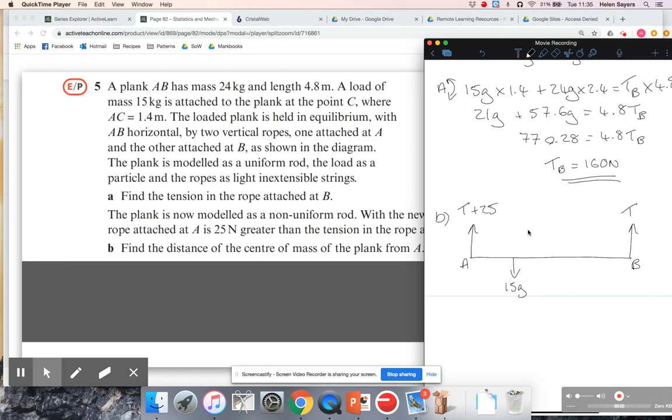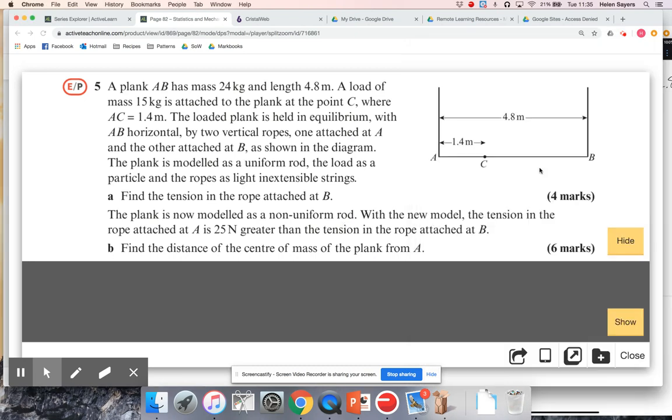Okay, and then I've also got the mass of the rod, which is 24 kilograms, so the weight is 24G, and I just don't know where that is. I know that that is still 1.4, so we haven't changed the mass of C.